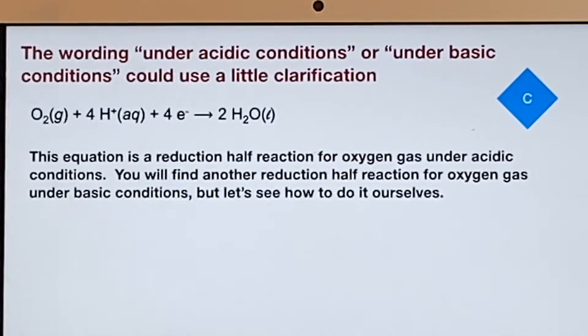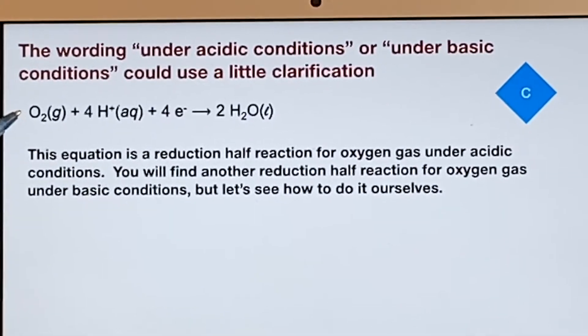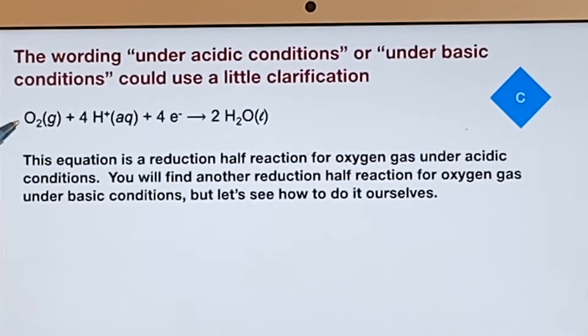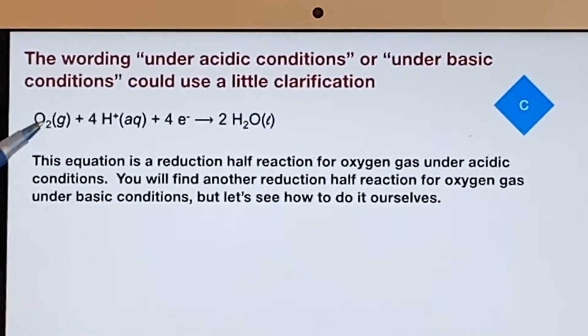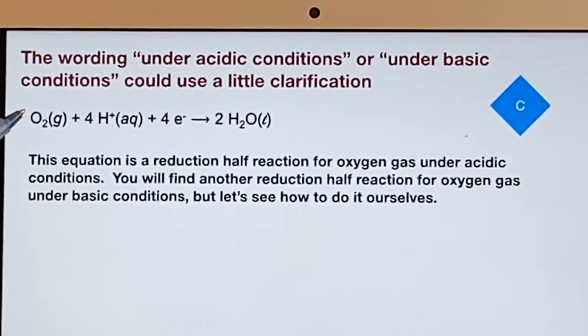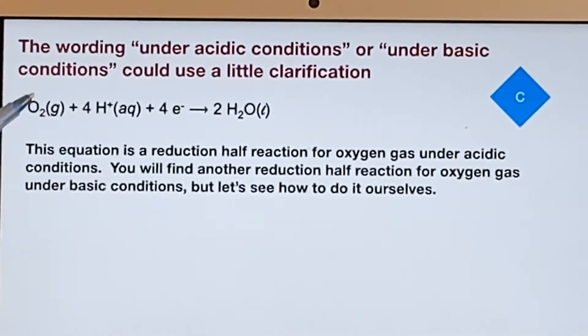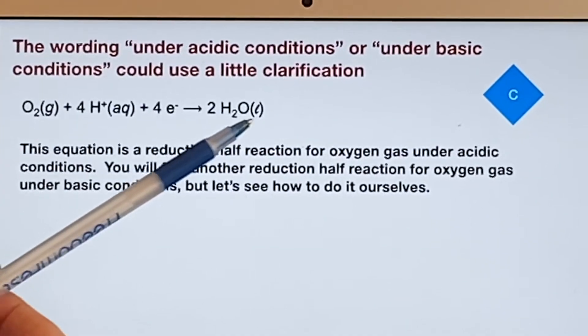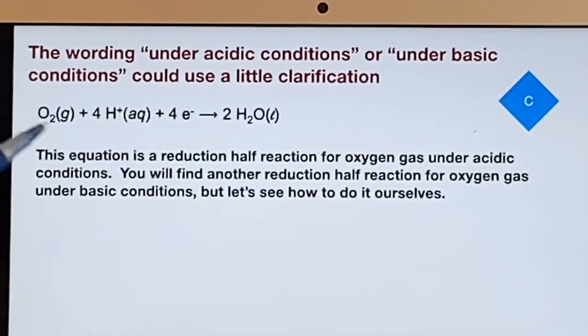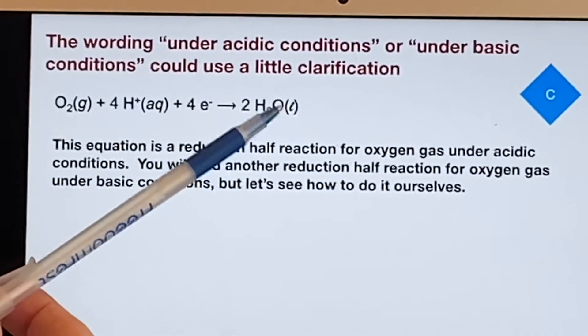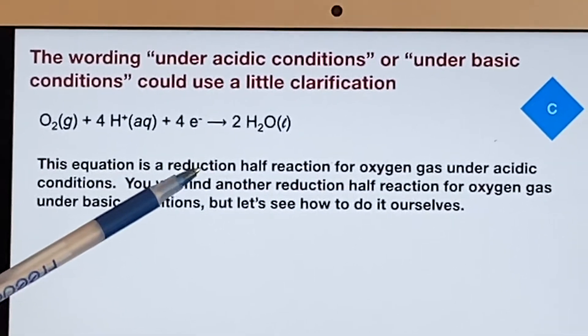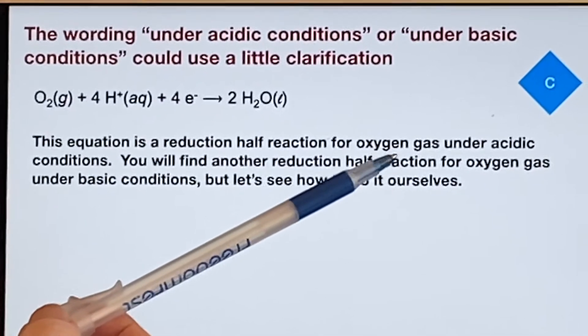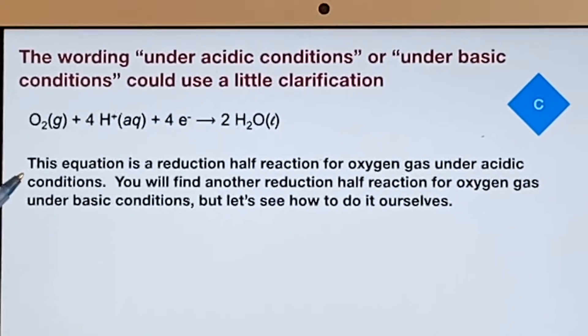Here we have a reduction half reaction for oxygen gas. We can see that it's a reduction because this started out as elemental oxygen which would have an oxidation number of zero. Over here the oxygen is in a compound and would be given an oxidation number of negative two. So it went from zero to negative two. It's a reduction half reaction for oxygen gas under acidic conditions.